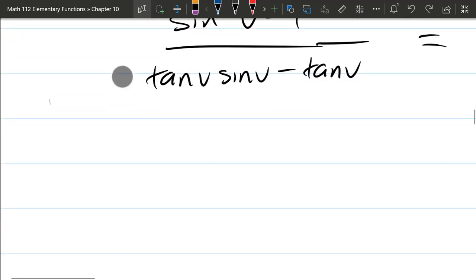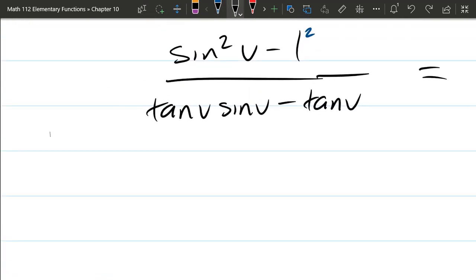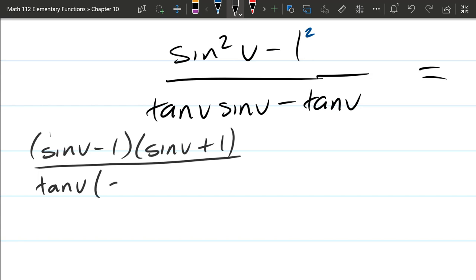So we're going to apply both of those factoring at the same time. So we've got sine v minus 1 times sine v plus 1 divided by tangent v times sine v minus 1.